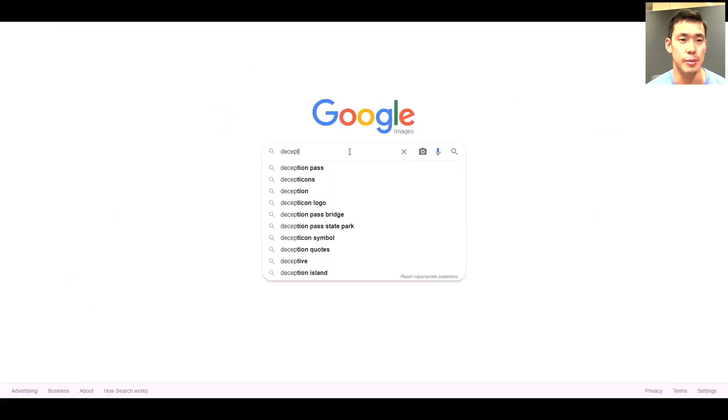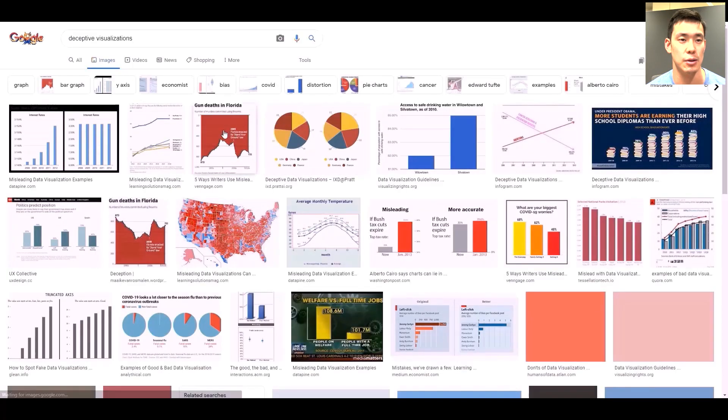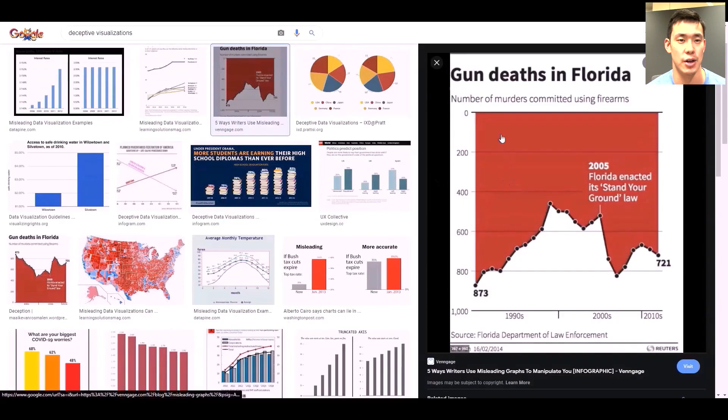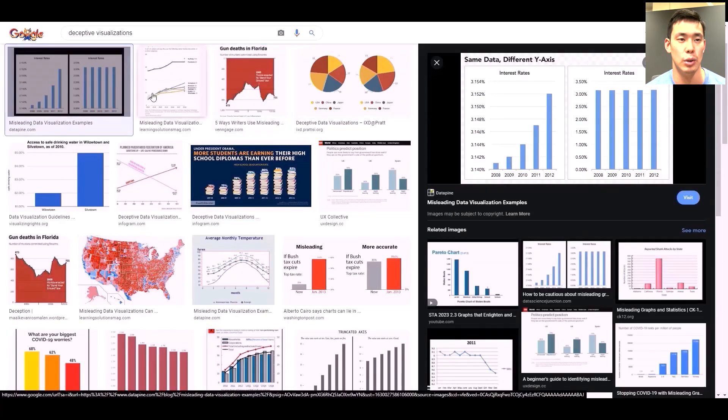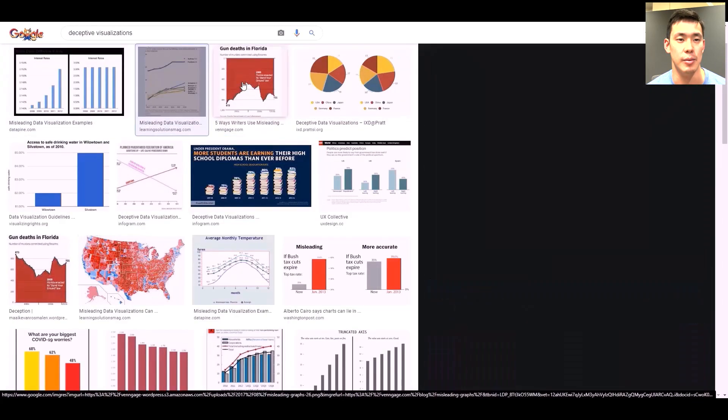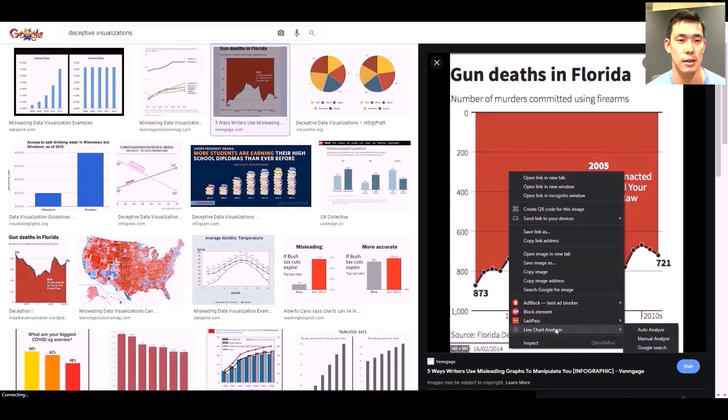The annotation tool is bundled into a browser extension. It runs in the background, detecting images, and allows the user to analyze all the charts in a web page. We will get started by right-clicking the image and selecting analyze. We will demonstrate the full pipeline here.